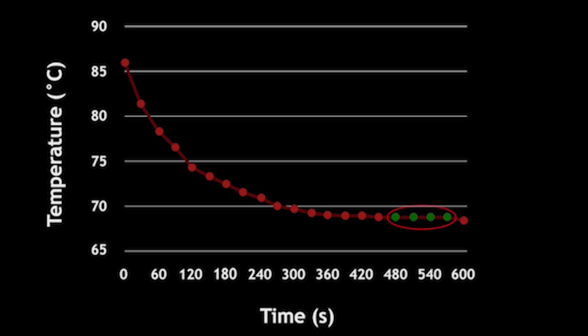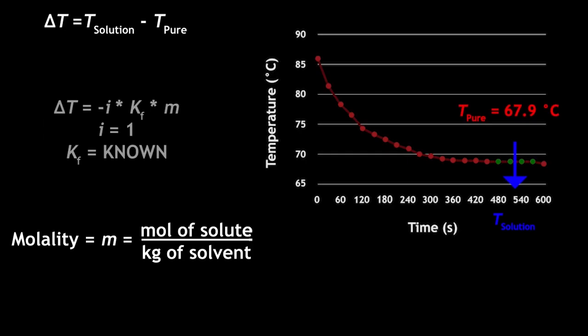As we create this curve we observe a plateau in the temperature we know that is the freezing point of the pure or mixed solution. As we add more and more solute we should observe the plateau at lower temperatures hence the freezing point depression. From this we can measure the freezing point and using the set of equations we can determine the molar mass of our solutes or unknown.